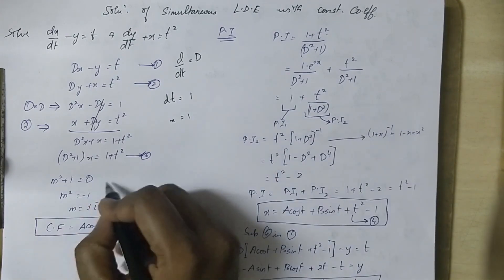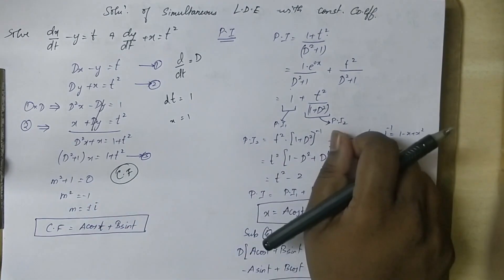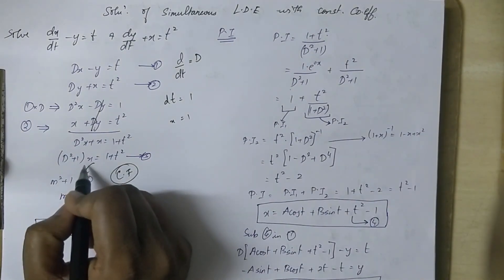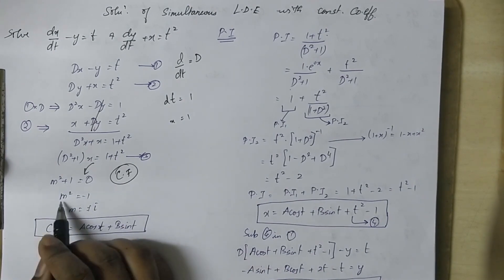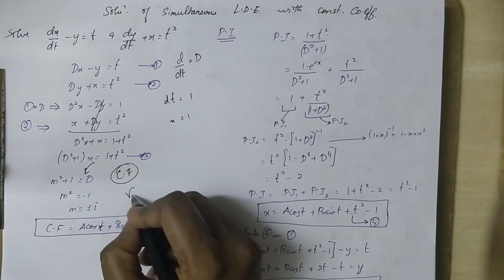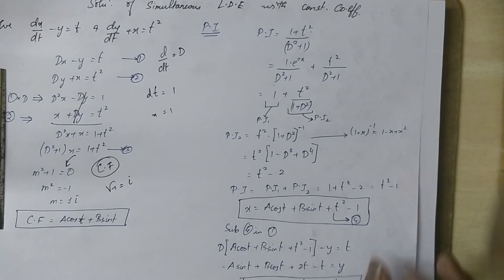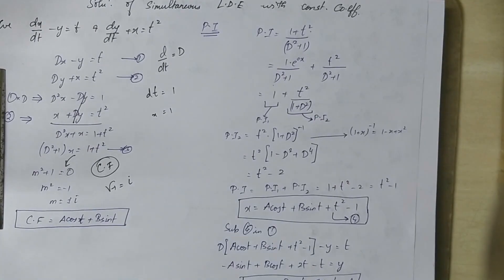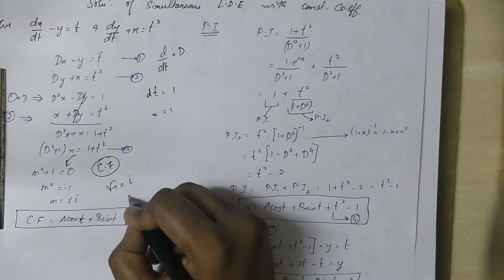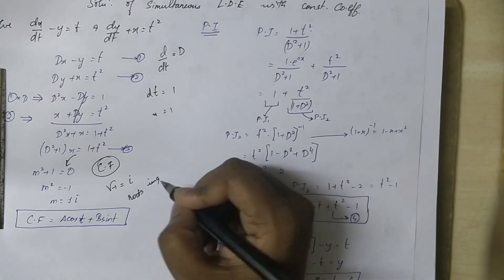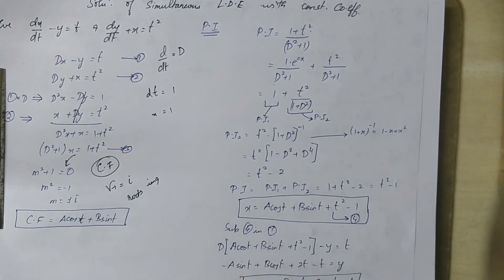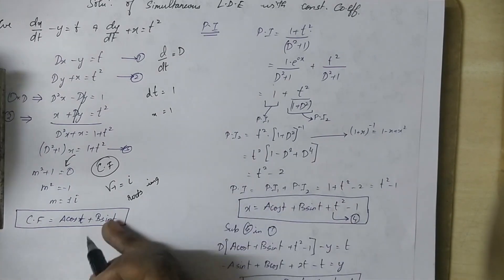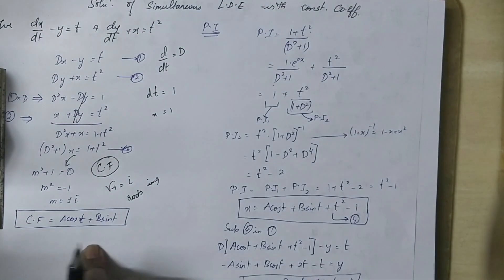Now we find the complementary function. Setting D squared plus 1 equal to zero gives D squared equal to minus 1, so D equal to plus or minus i. The roots are imaginary, so the complementary function is CF equal to a·cos(t) plus b·sin(t).